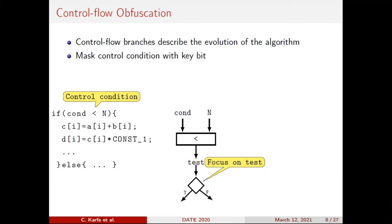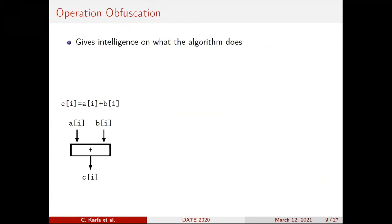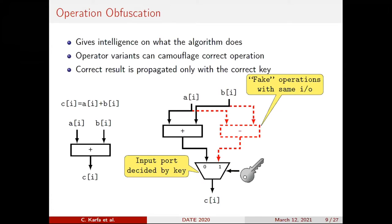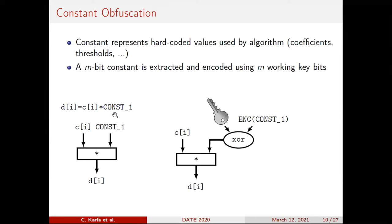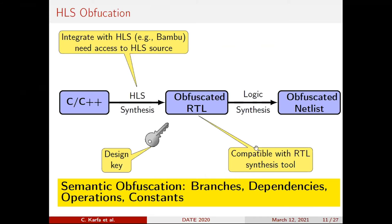One prominent work is TAU, published in 2017, which does locking during high-level synthesis. It takes C code and produces a locked RTL where control flow operations, dependencies, and constants get obfuscated. Specifically, TAU XORs conditional statements with a key so you cannot know the control flow without the key. Similarly, it adds spurious operations with a key to decide the correct operation, and it encrypts constants with XOR. These are the primary things that happen during high-level synthesis locking.